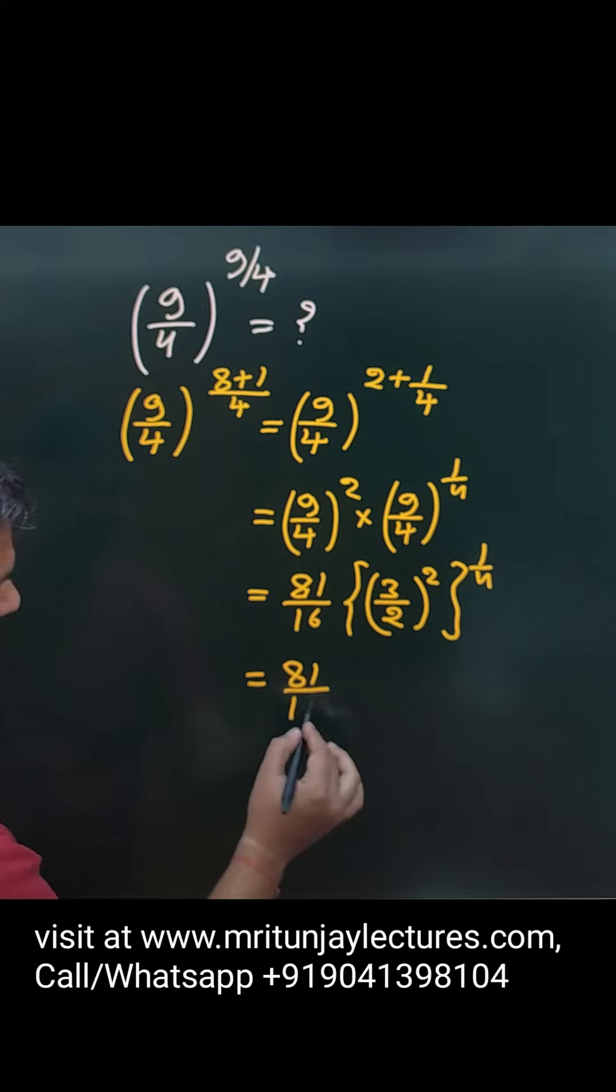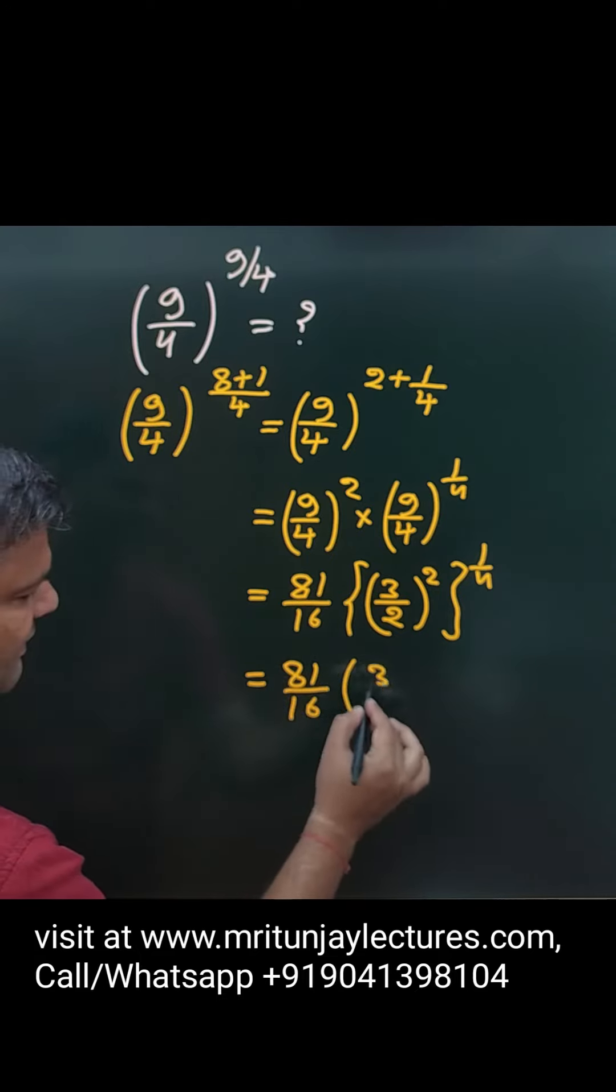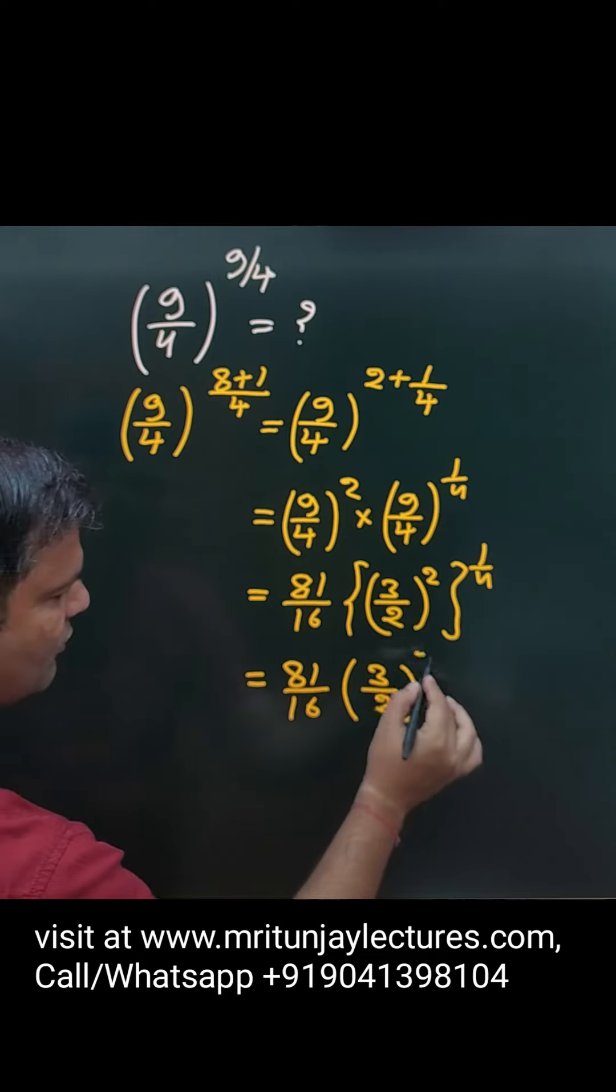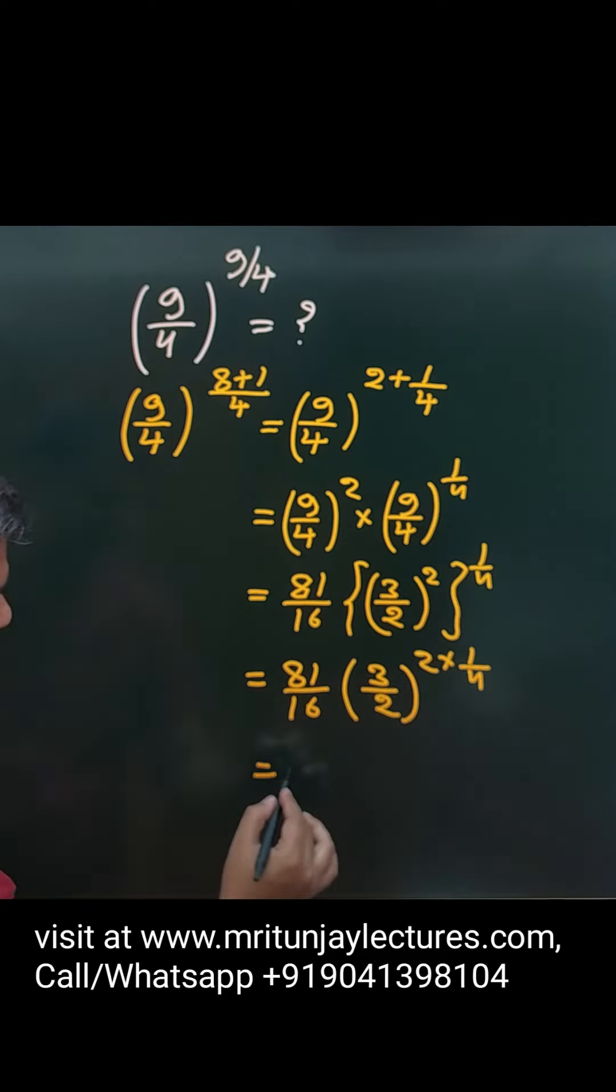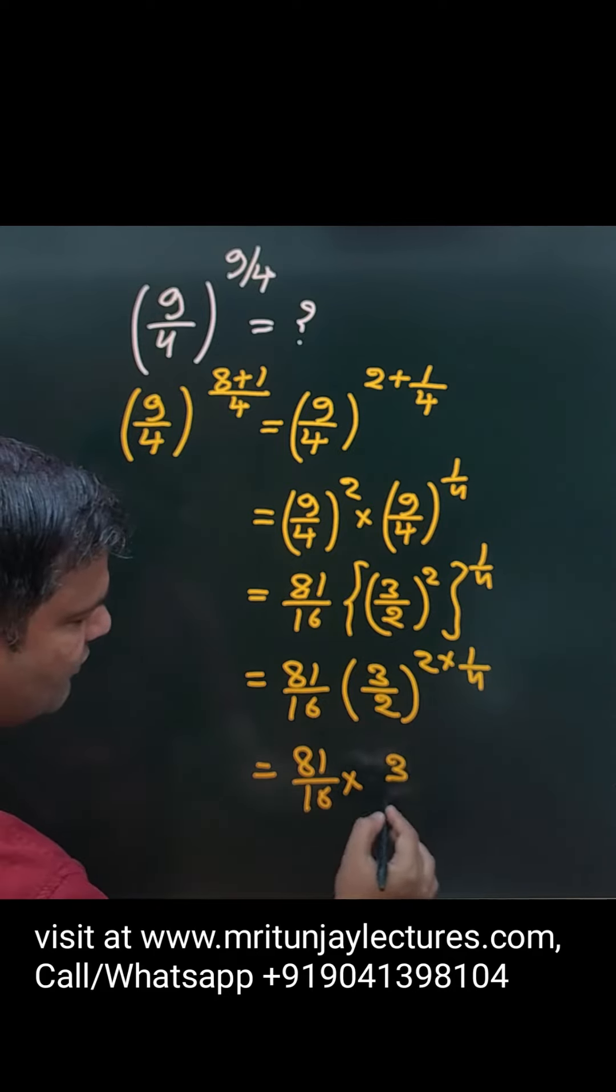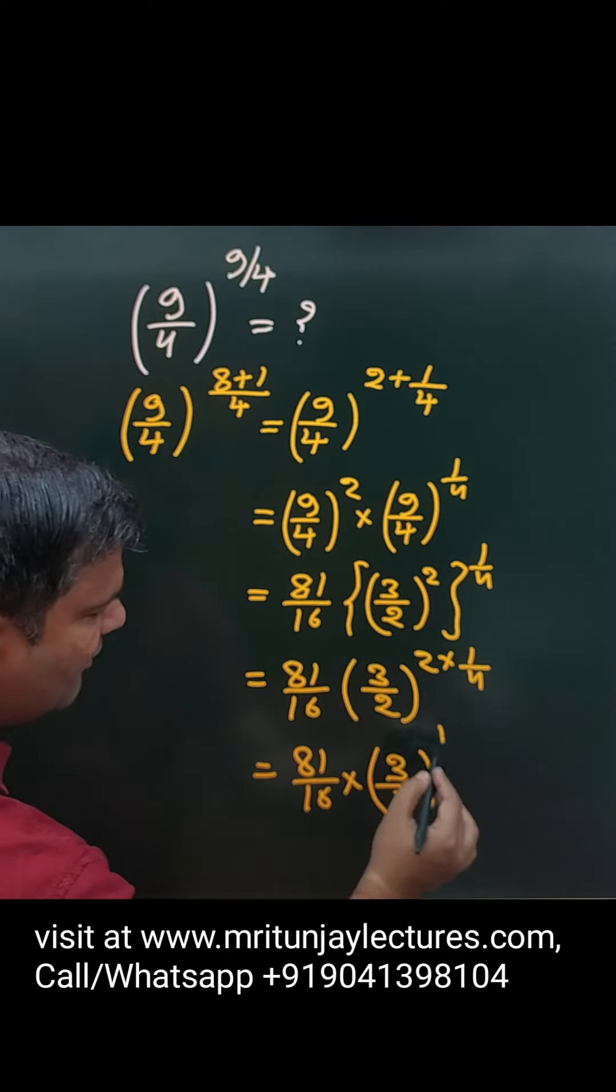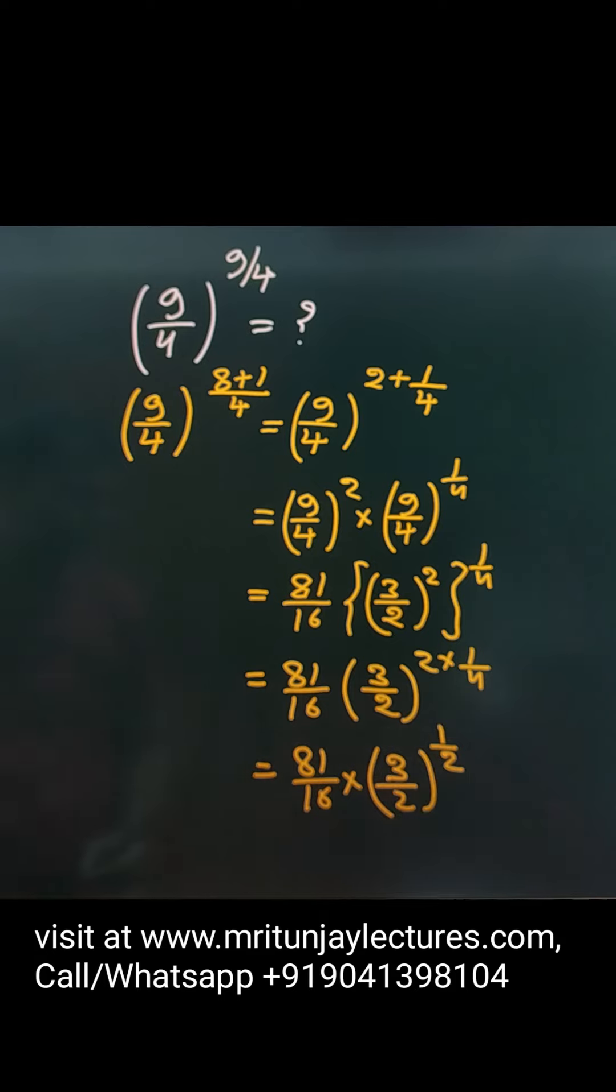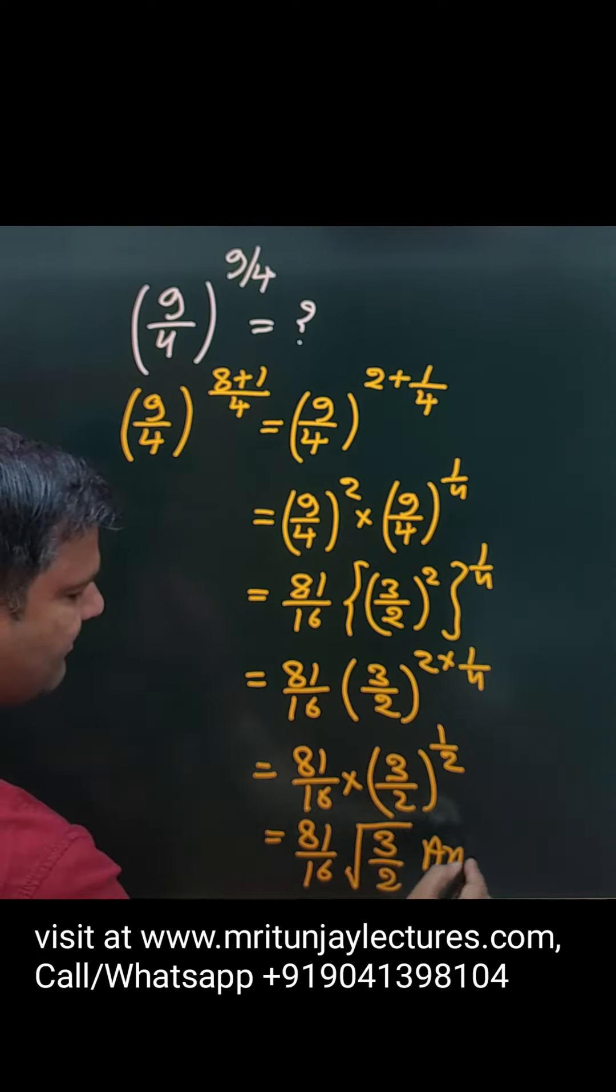So 81 divided by 16, and this is 3 by 2, 2 into 1 by 4. So that is 81 divided by 16 into that one written simply 3 by 2 to whole power 1 by 2. The final answer is how much? 81 divided by 16 under root of 3 by 2 is the right answer.